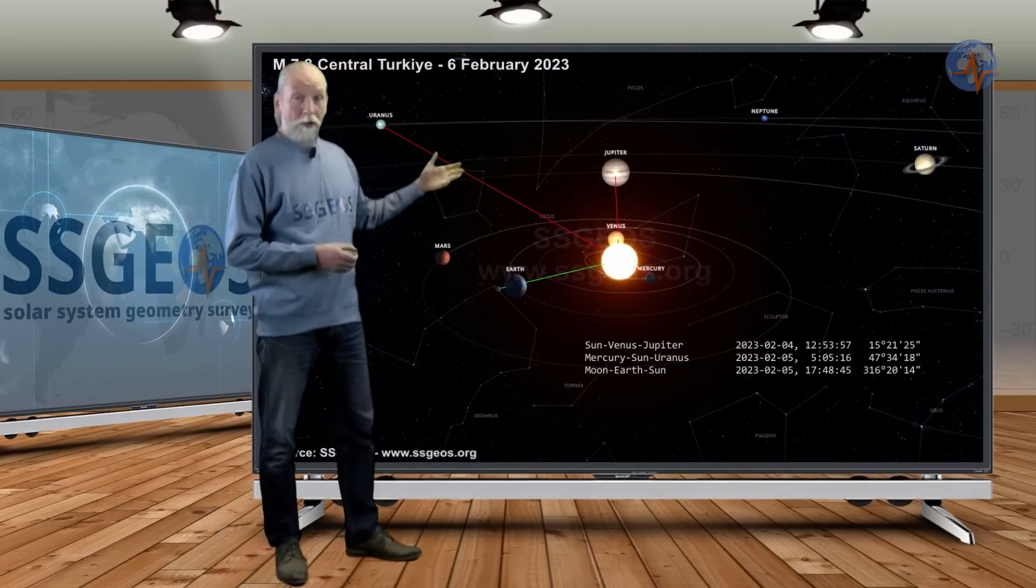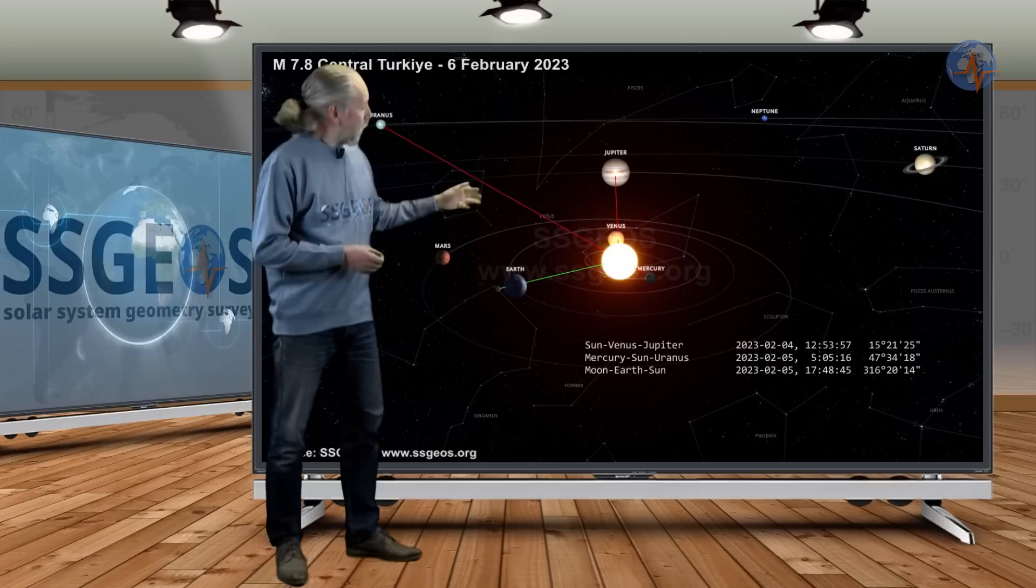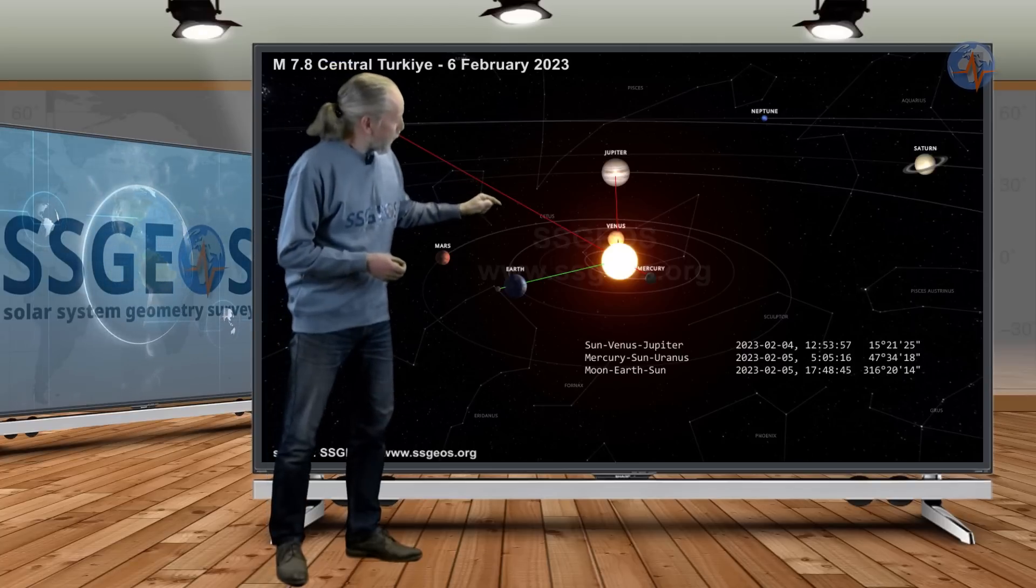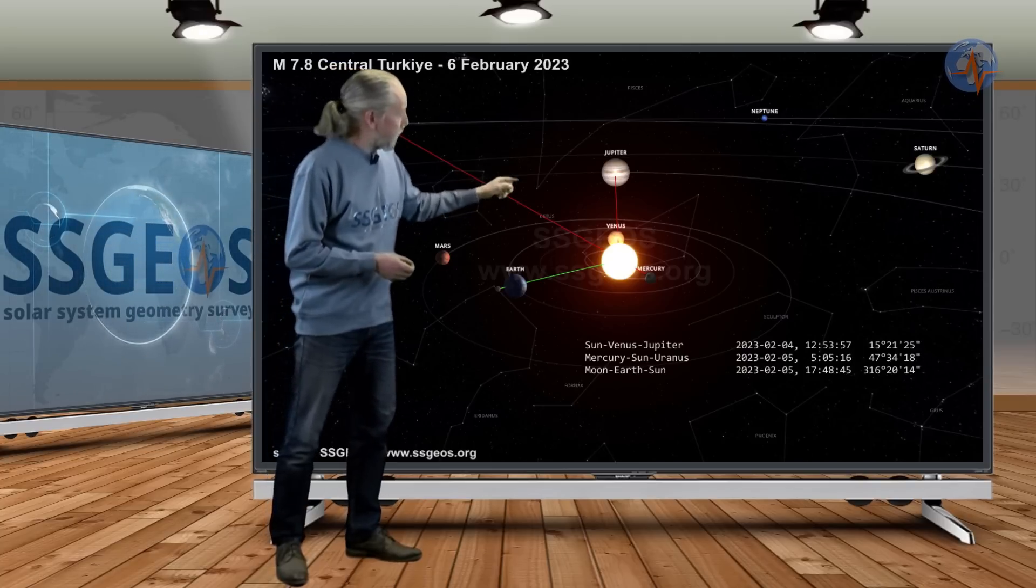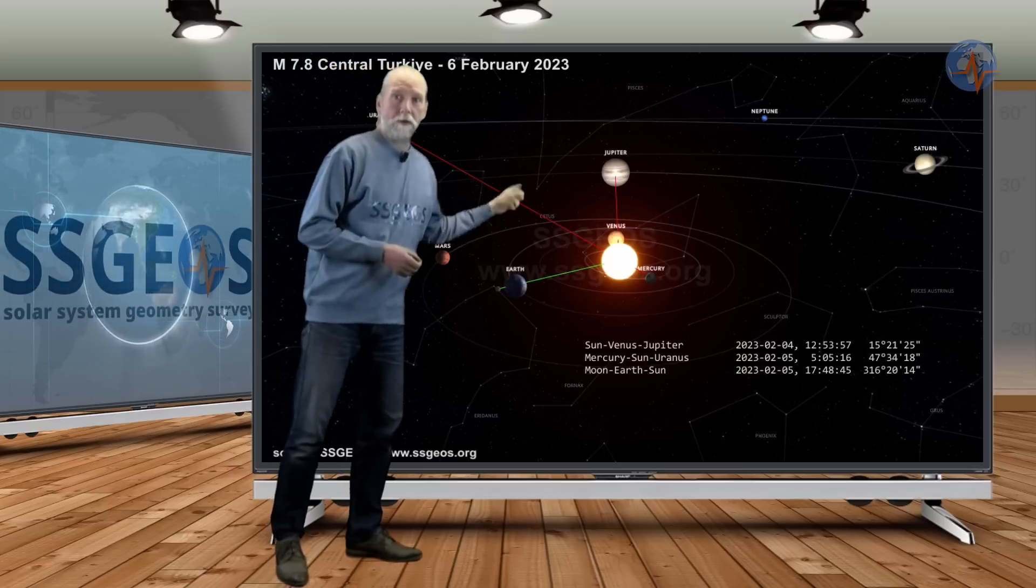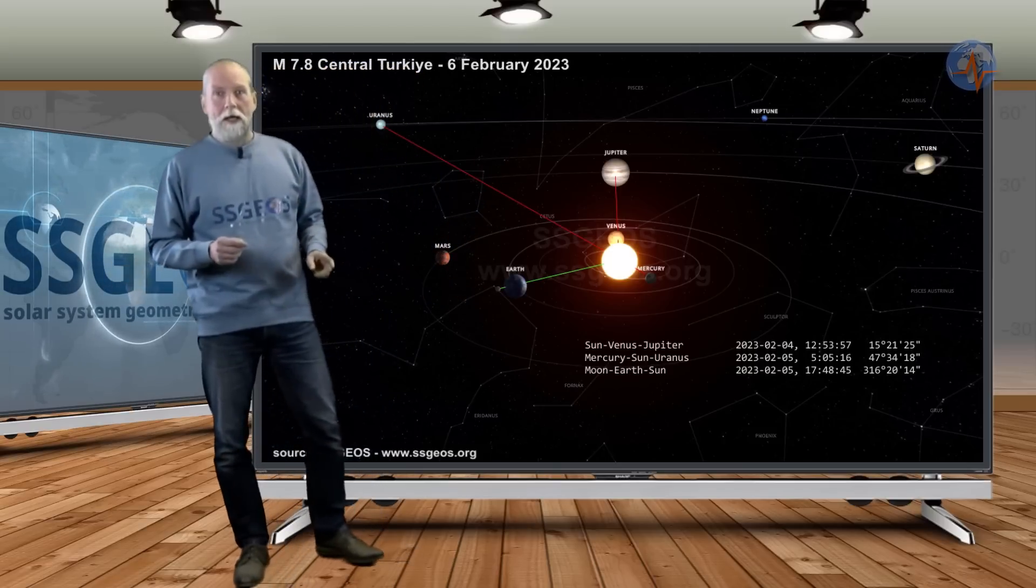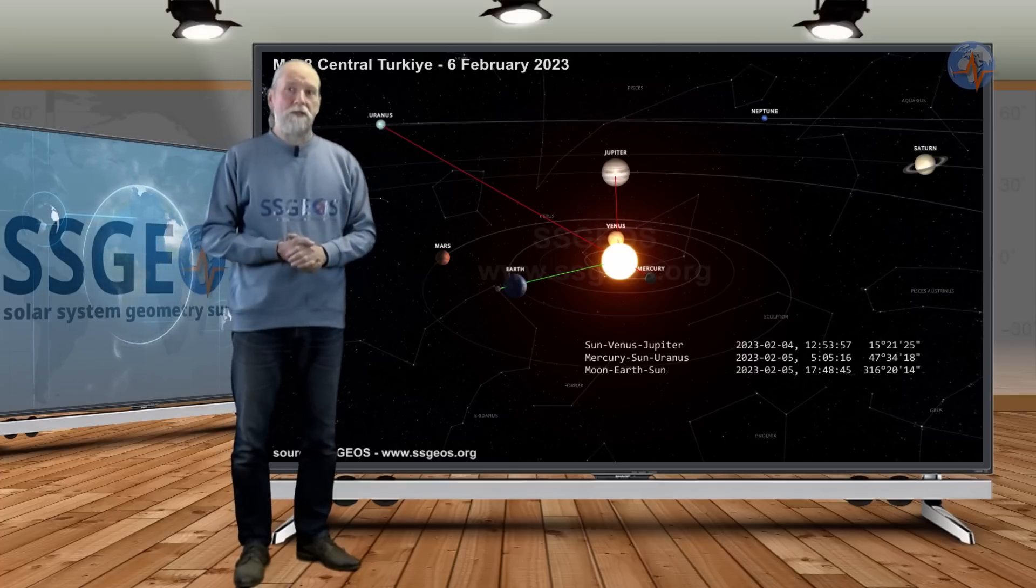On 6 February, the major earthquake in Turkey occurred at full moon, but at the same time we saw a planetary conjunction with the Sun, Venus, and Jupiter, and Mercury, Sun, and Uranus at the same time. That makes a major difference.